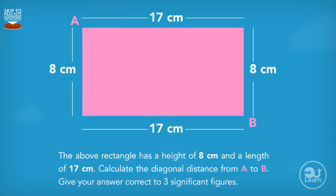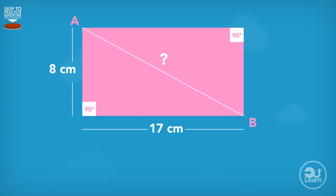Another example can be, the above rectangle has a height of 8cm and a length of 17cm. Calculate the diagonal distance from A to B. Give your answer correct to three significant figures. Just like how I explained it before, we can make two right-angled triangles by splitting the rectangle with a diagonal line. This reveals the different parts we need for the Pythagoras equation.